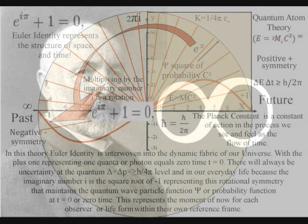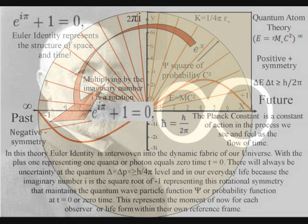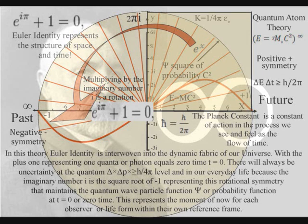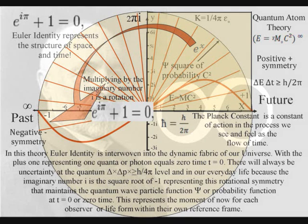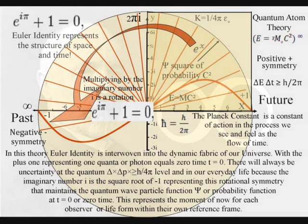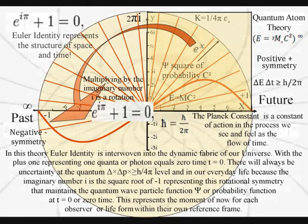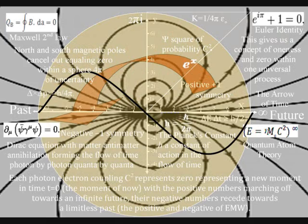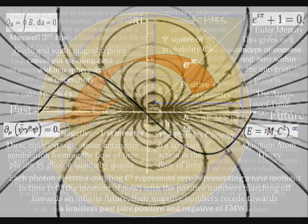The zero represents zero time, or t equals zero, the moment of now, formed by light interacting with matter. The zero represents an infinite branching point, with the positive numbers marching off, forming a potential future with a square of probability. The negative numbers receding towards a limitless past, representing the positive and negative of electromagnetic waves.